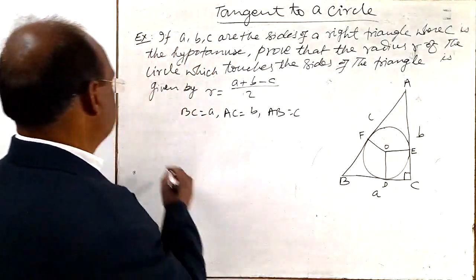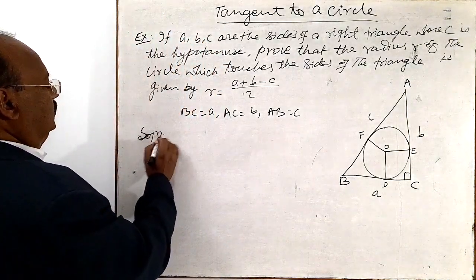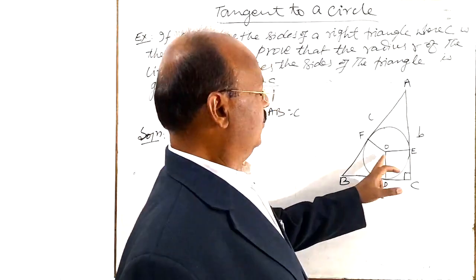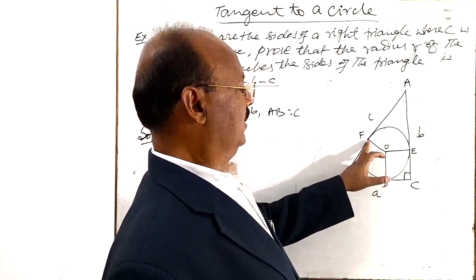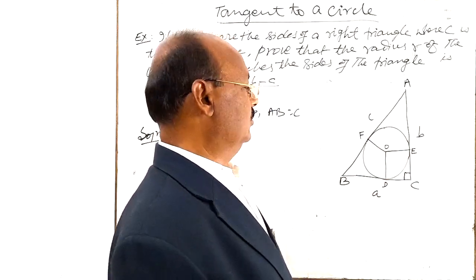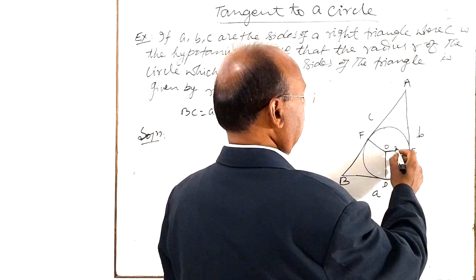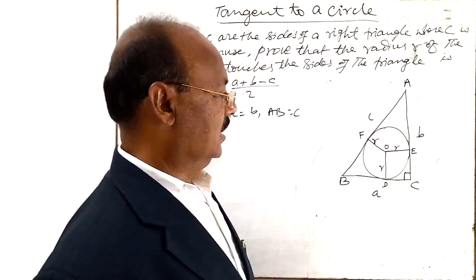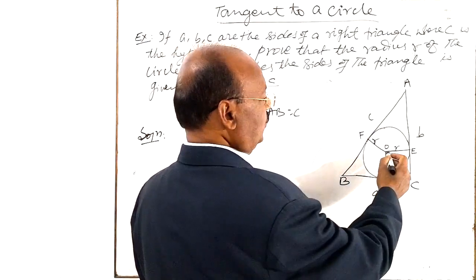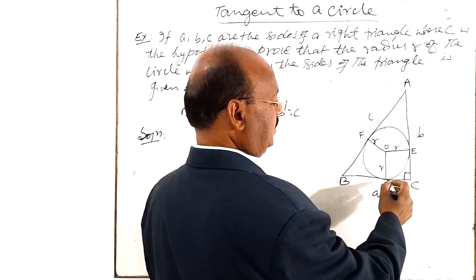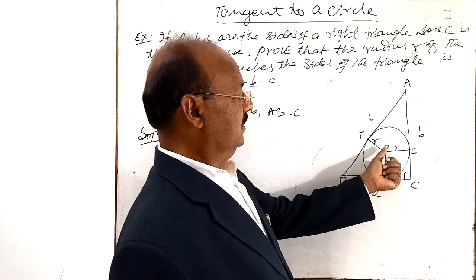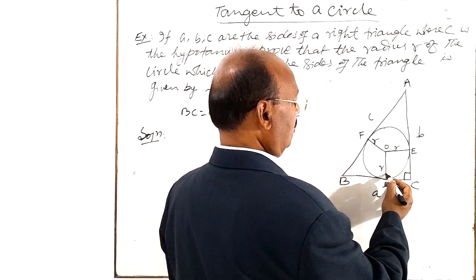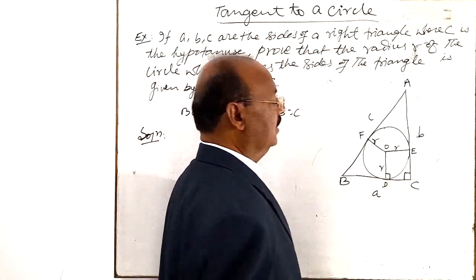Now let us see the solution. Also here OE, OD and OF are radii of the circle. So these are radius of the circle. Let us say this is R. Here O and D are joined and we know that radius is perpendicular to the tangent at the point of contact.